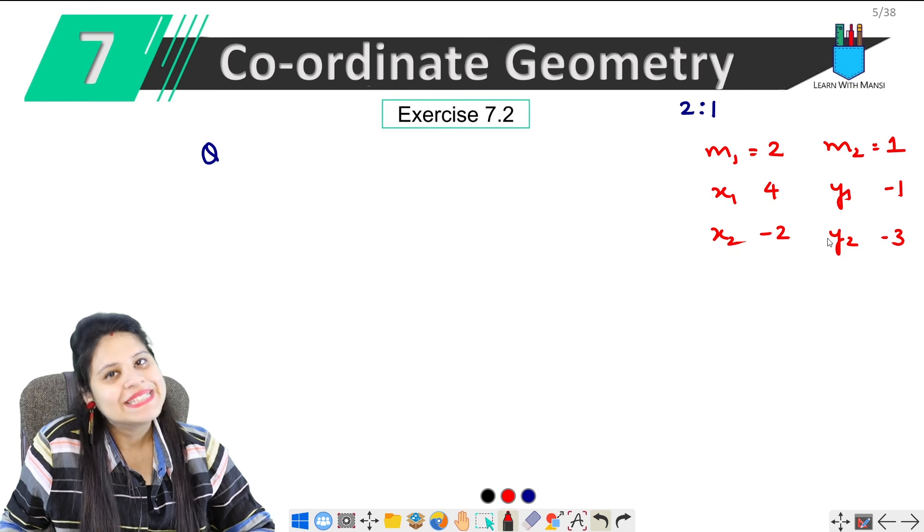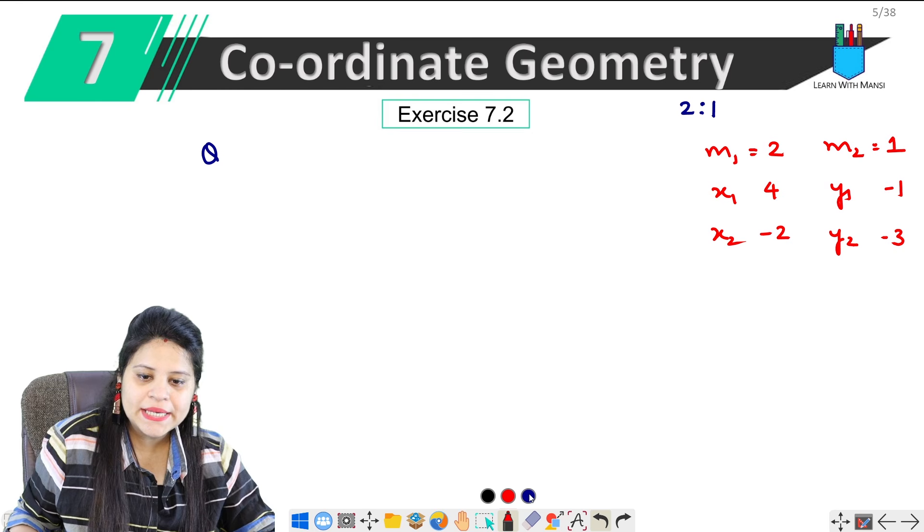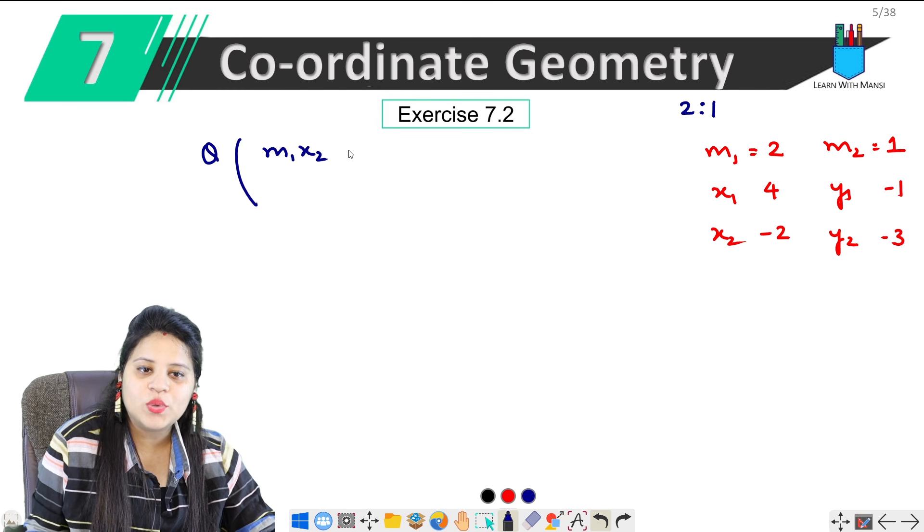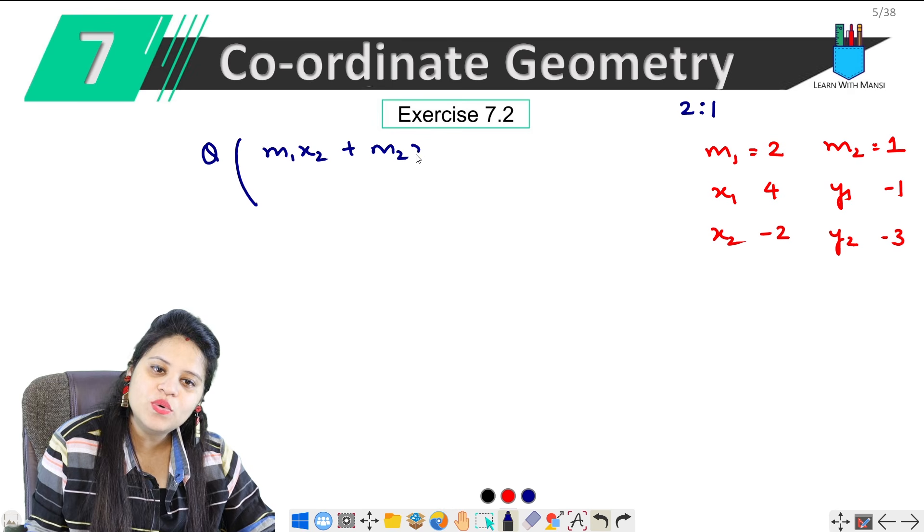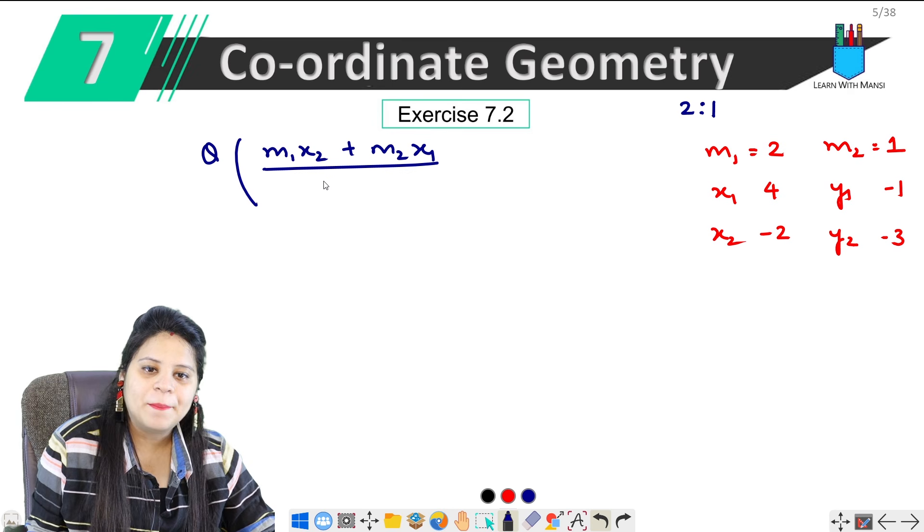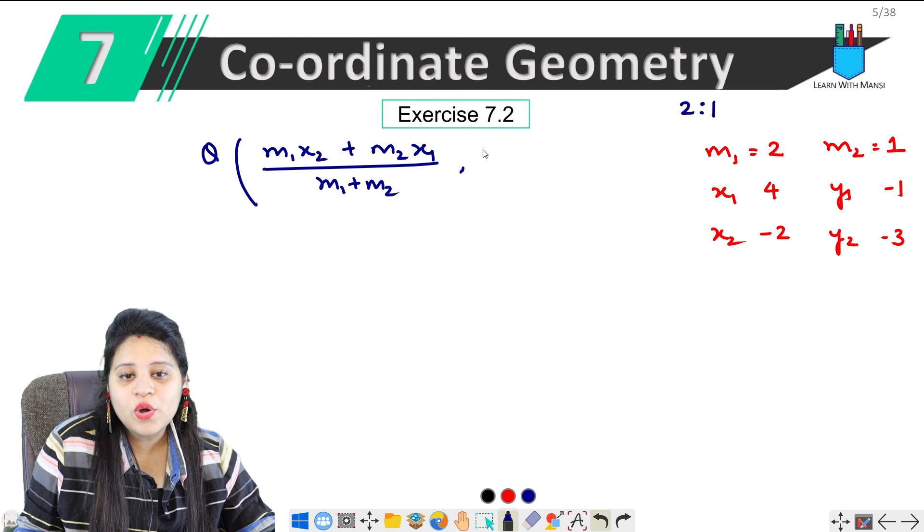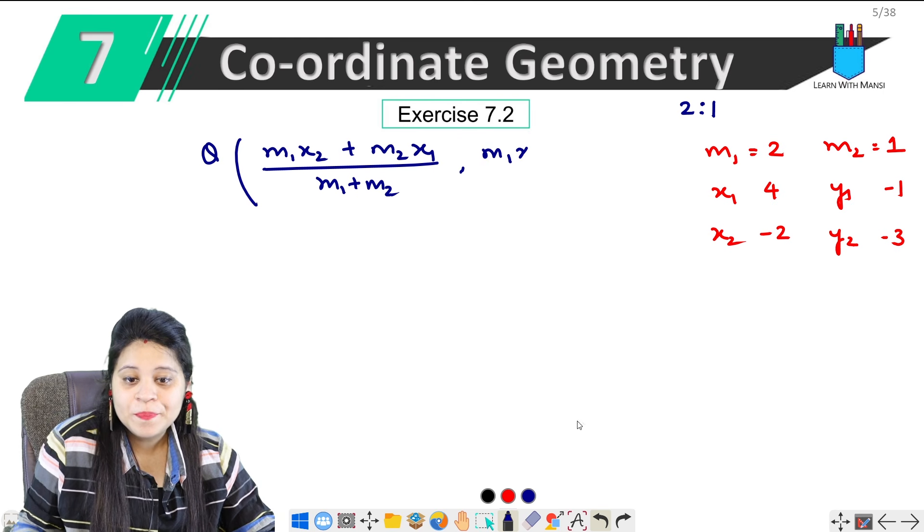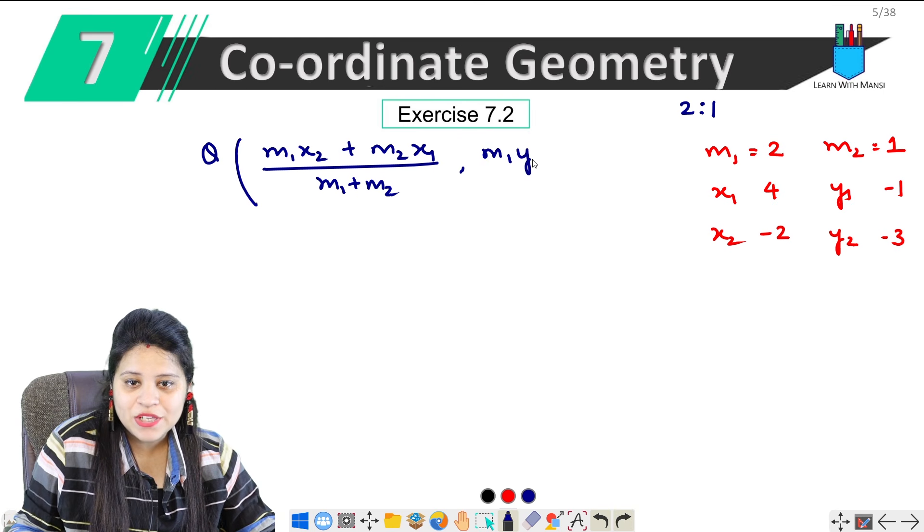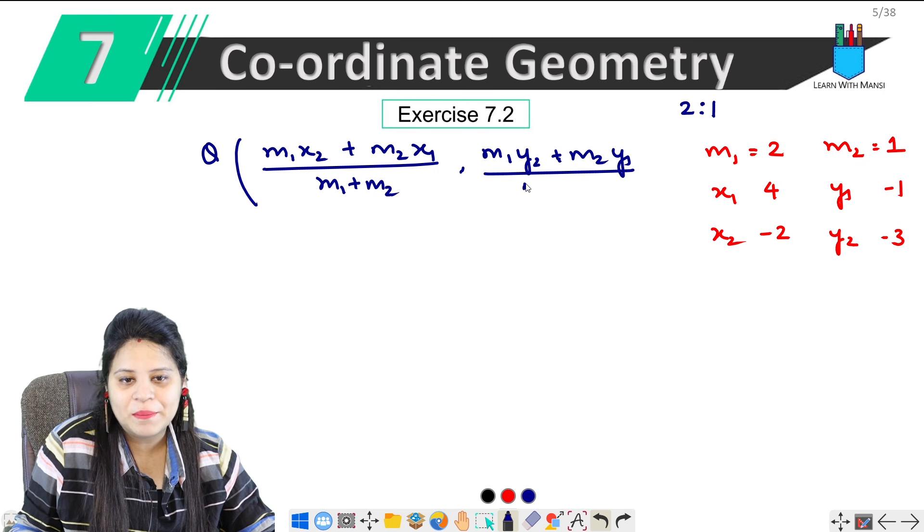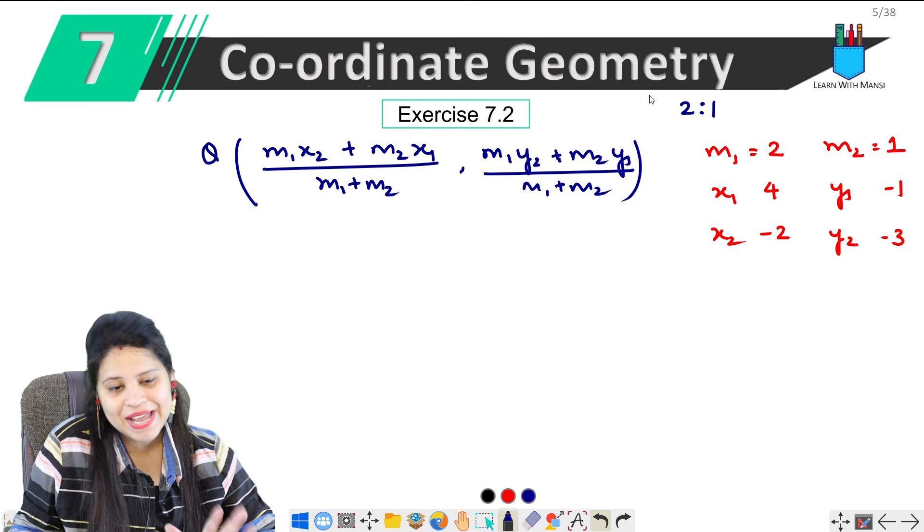So now we have the formula. Q coordinates: m1x2 + m2x1 upon m1 + m2. Y coordinates: m1y2 + m2y1 upon m1 + m2. Values put.